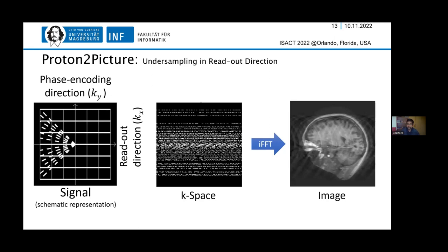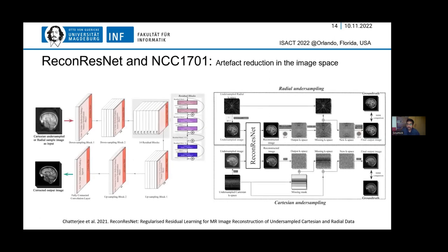This is exactly where our research came into play. The first thing we did was propose ReconResNet and the NCC1701 pipeline. What we try to do is supply the undersampled image — which has artifacts — to a black box model, and the model tries to recover the good image by filtering those artifacts. The NCC1701 pipeline goes further by reusing data we already have to improve the images even further.